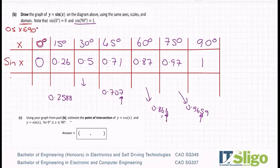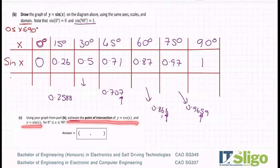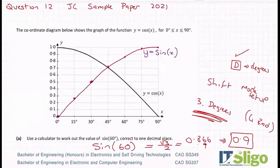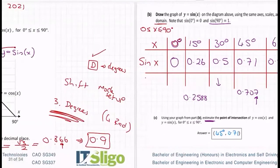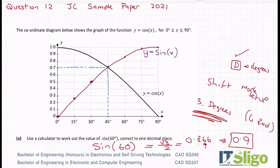Use your graph from part b to estimate the point of intersection of y equals cos x and y equals sine x. Going back to the graph, the intersection is where the two graphs cut through each other — it's at about 45 degrees, 0.71. In the exam, there's a tolerance — they might accept anything from 44 to 46 degrees and 0.69 to 0.72, something like that.